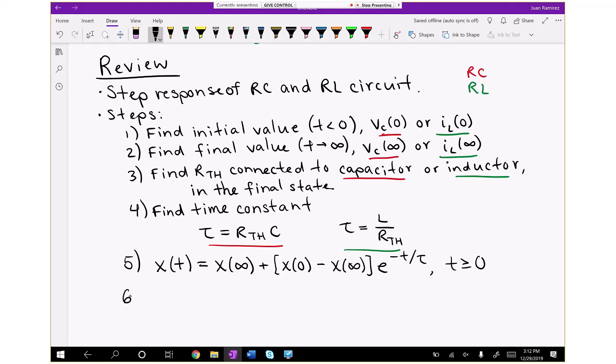The sixth step, which we sometimes need, is to find any other circuit quantities based on the capacitor voltage or inductor current. I would like to emphasize here that if you're looking for a resistor voltage or resistor current in an RC or RL circuit, you're not going to go through each of these steps for that voltage or current. Instead, you're going to go steps one through five to find capacitor voltage or inductor current, and then you're going to use that capacitor voltage or inductor current along with any circuit analysis techniques you need to then find your resistor current or resistor voltage.